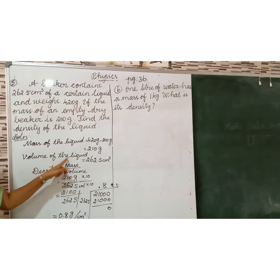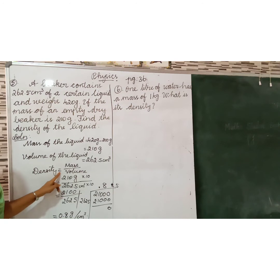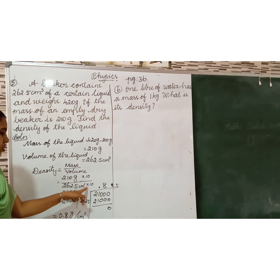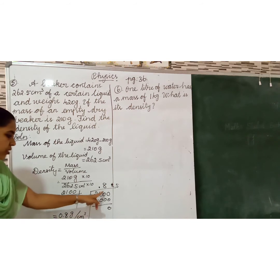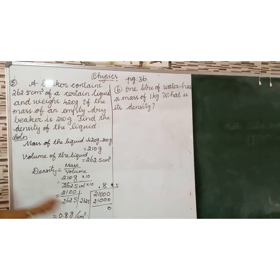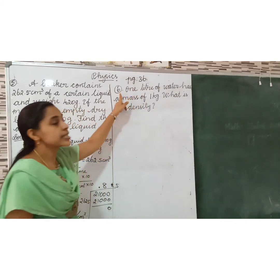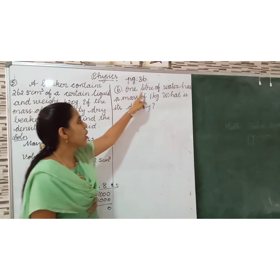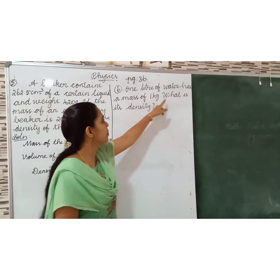So the density of the liquid is 0.8 gram per centimeter cube. Summary: mass of the liquid is 420 minus 210 equals 210 gram; volume of the liquid is 262.5 centimeter cube; density equals mass divided by volume, substituting these numbers and multiplying numerator and denominator by 10, we get the density of the liquid.